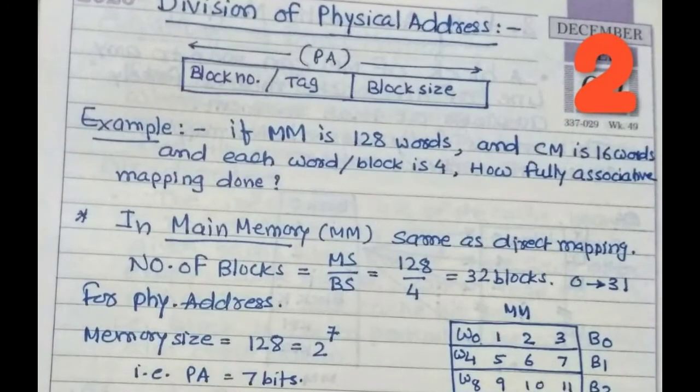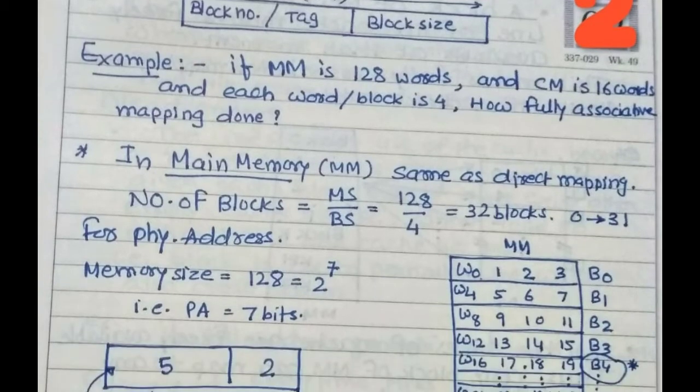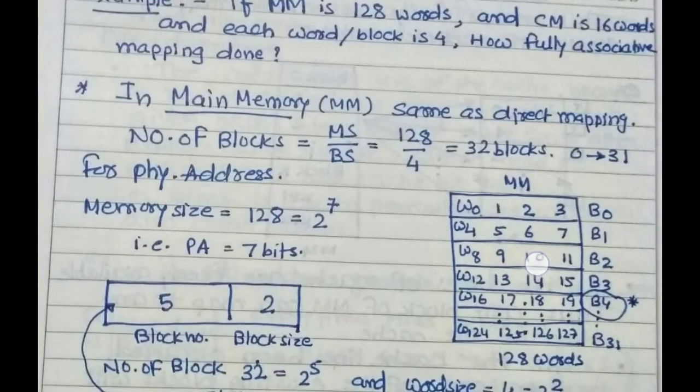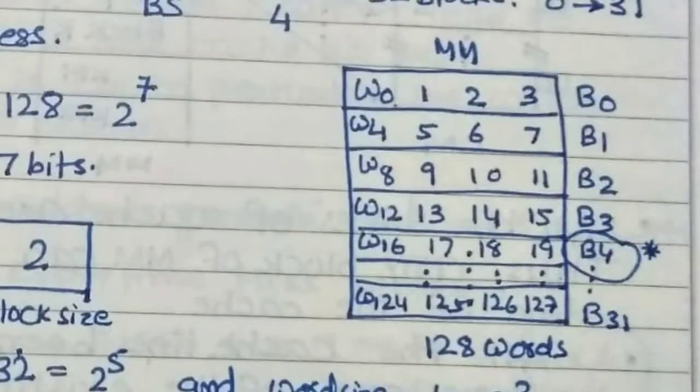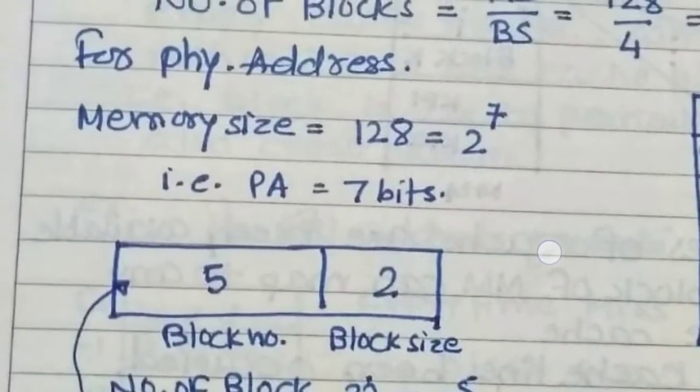If the main memory is 128 words and the cache memory is 16 words, and suppose words per block is 4, how can we map fully associative type? First we want to know the number of blocks. Number of blocks is MS/BS, it means memory size divided by block size. This is 128/4 equals 32 blocks. We can design 128 words in 32 blocks for main memory.